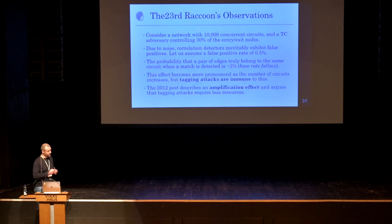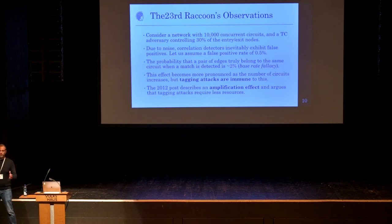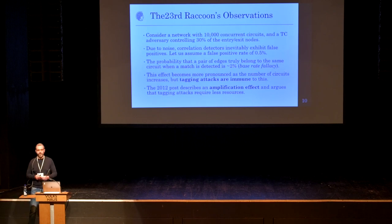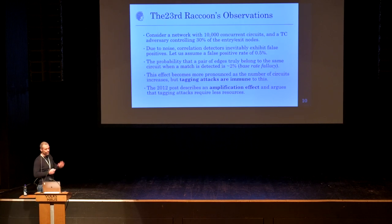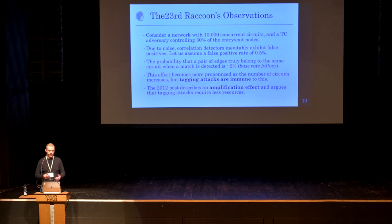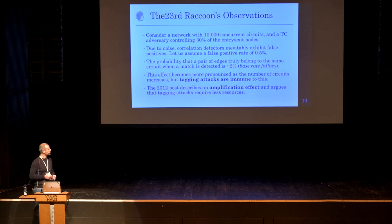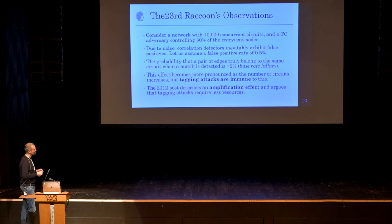This effect becomes more pronounced as the network size increases. Tagging attacks, on the other hand, because they have zero chance of false positives, are immune to this effect and hence scale much better from the adversary's perspective. This is the main argument made in the 2008 post. The 2012 post builds on these ideas and also argues for an amplification effect which makes tagging attacks consume fewer resources from the adversary's point of view.